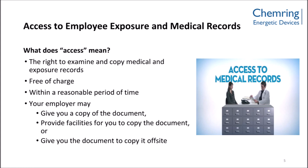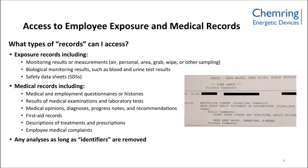Under no circumstances should an entitled employee or representative be denied this potentially life-altering information. In regards to the type of records that can be accessed, there are various kinds, such as exposure and medical records. Exposure records include monitoring results or measurements through workplace sampling, biological monitoring results such as from blood and urine tests, and safety data sheets, which may indicate specified materials that may pose a threat to human health. Medical records include documentation of the employee's medical history, such as from medical and employment questionnaires, test results, first aid records, and employee complaints, to name a few.